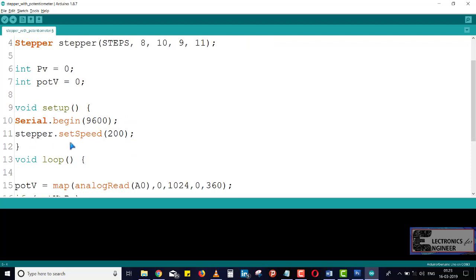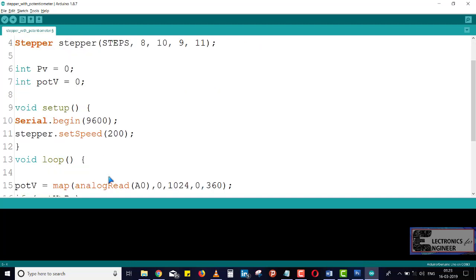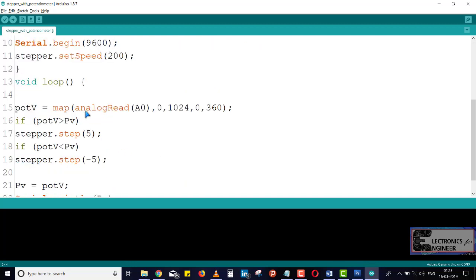And after that, according to our header file, we given this variable speed 0 to 200. You can give anything here. In the loop, I used this map function. By this map function, this is analog read A0. Means we given this pin to our potentiometer variable.